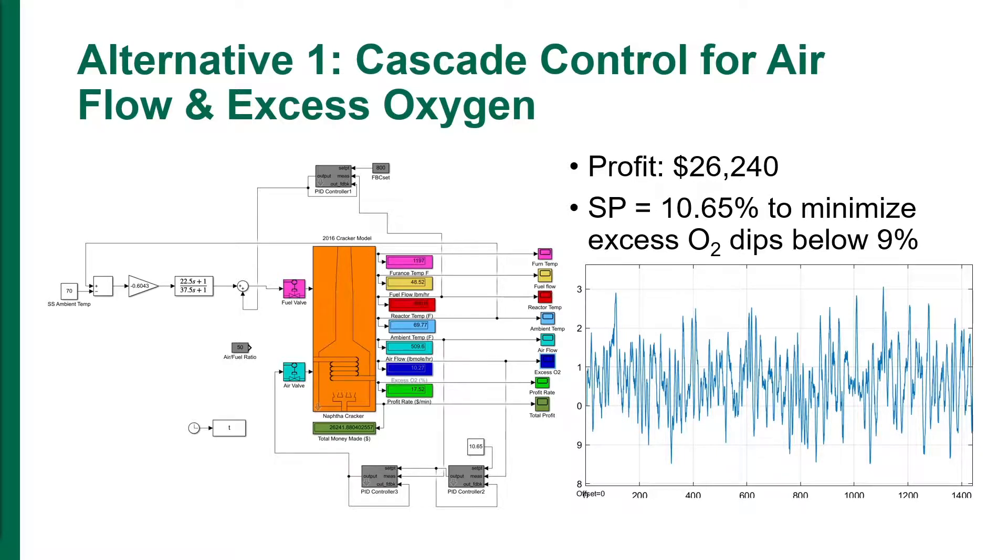The inner loop, PID controller 3, controls the air flow, while the outer loop controller, PID controller 4, controls the excess O2. The profit was $26,240.